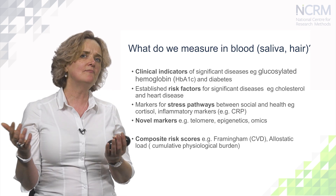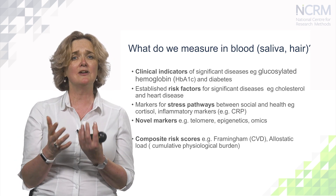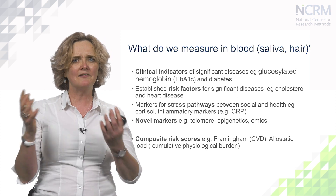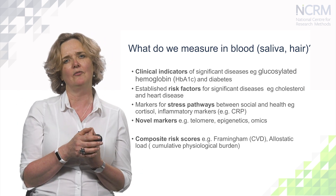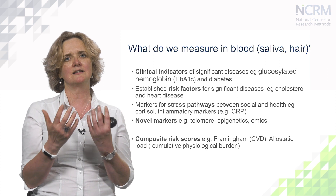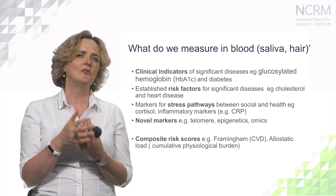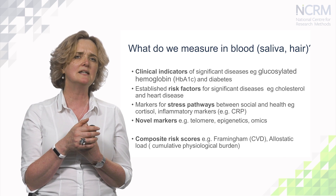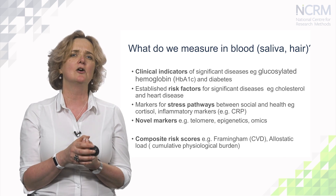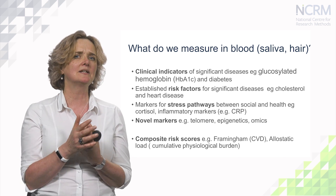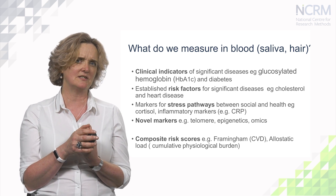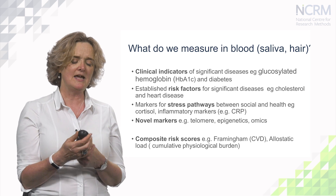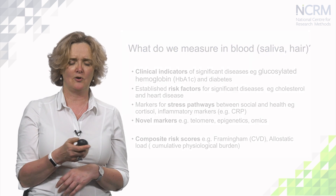Having indicators of all these different risk factors and diseases is really helpful, but one thing we often want to do is capture the whole of somebody's health. These factors are built into risk scores. A couple of really famous ones are the Framingham risk score for heart disease, and allostatic load, which is a measure of cumulative burden on your physiological system due to stress. I'll talk about those a little bit in part two of this presentation.